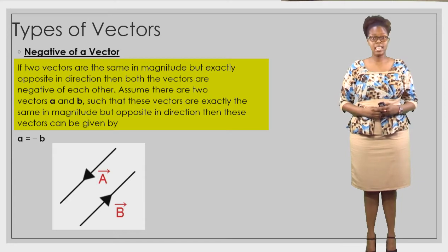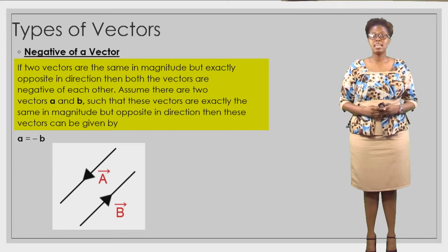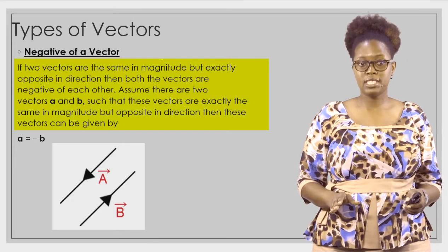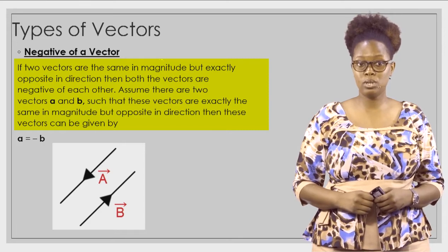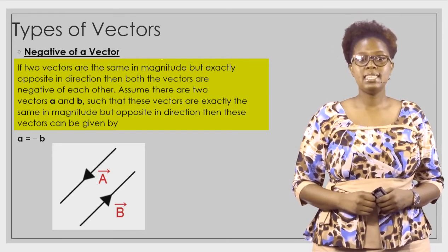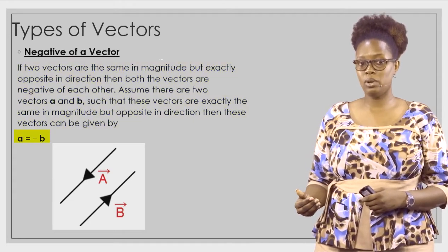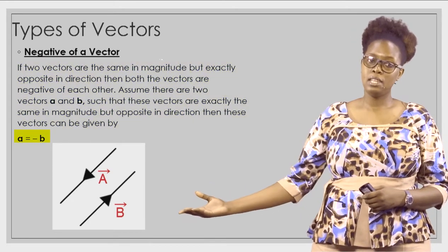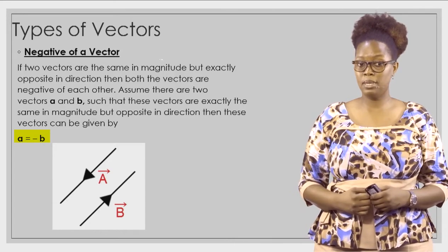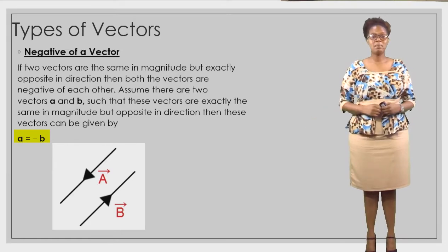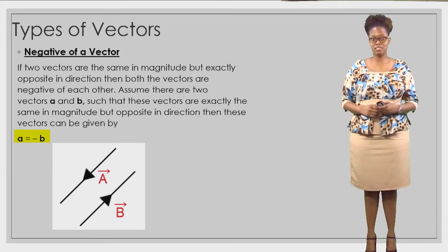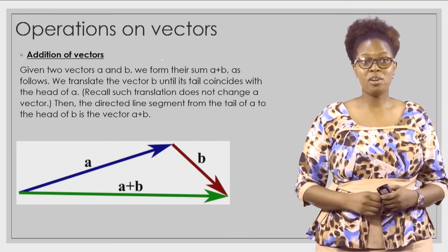Negative vectors: if two vectors are the same in magnitude but exactly opposite in direction, then both vectors are the negative of each other. If vectors a and b are the same in magnitude but opposite in direction, then a equals negative b. Vector a and vector b have the same length but are going in opposite directions — this is an example of a negative vector.